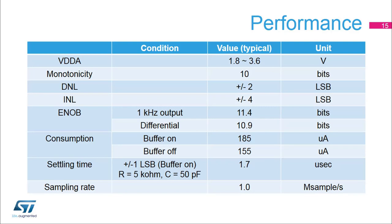The DAC buffered output has a settling time of 1.8 microseconds with a 5 kilo-ohm and 50 pF load. The DAC can handle a sampling rate of 1 mega-sample per second. When using external components, it can support up to 10 mega-samples per second, as described in detail in application note AN4566.